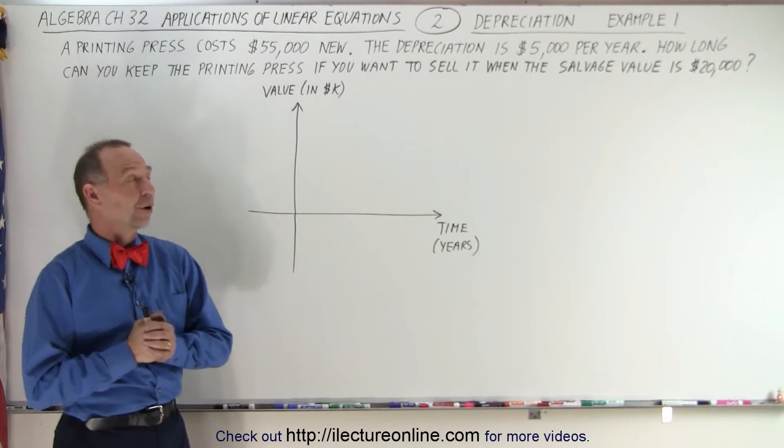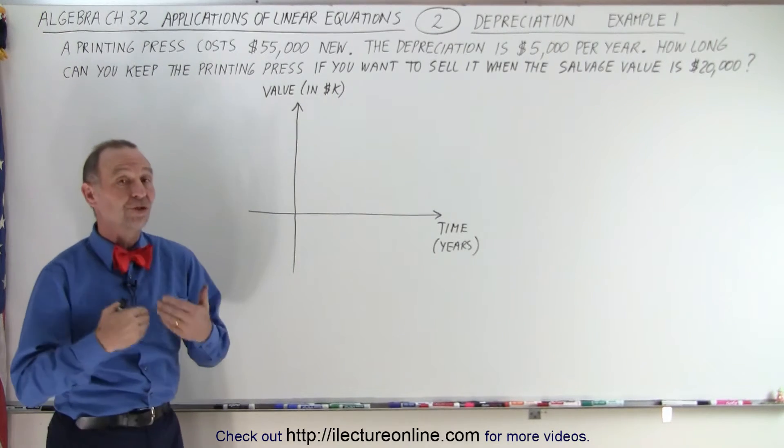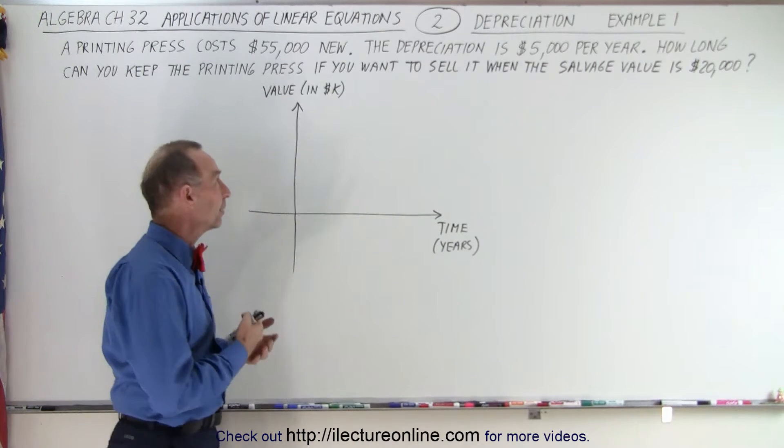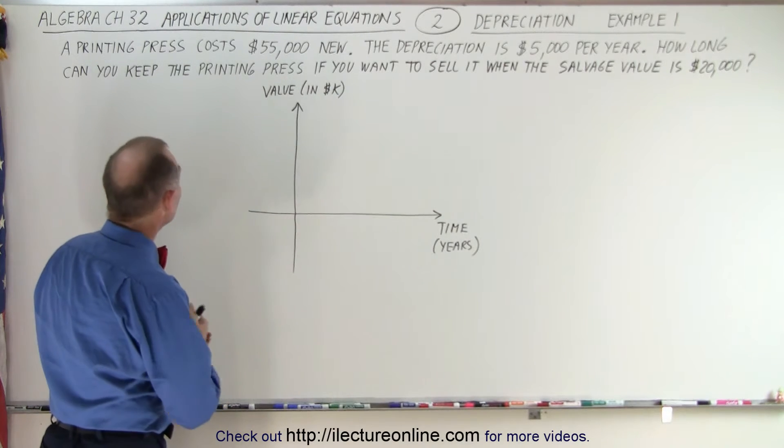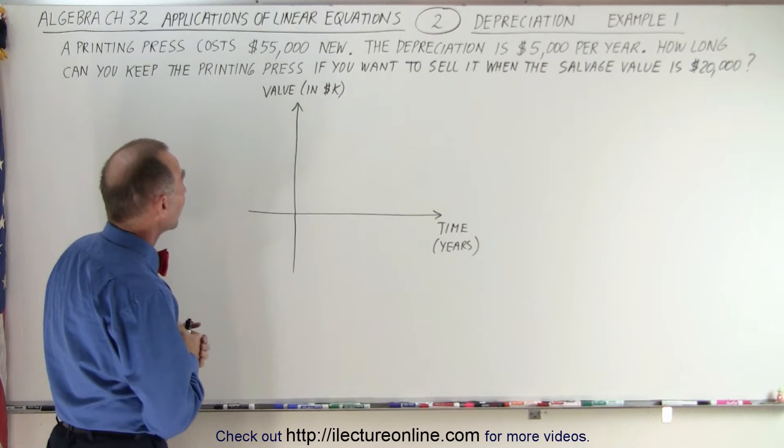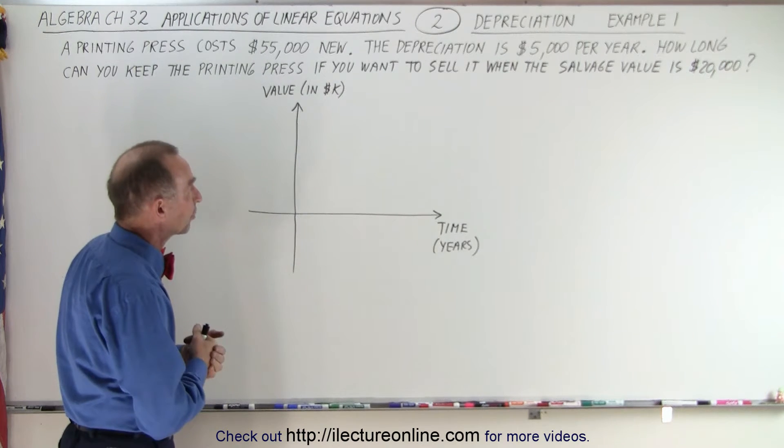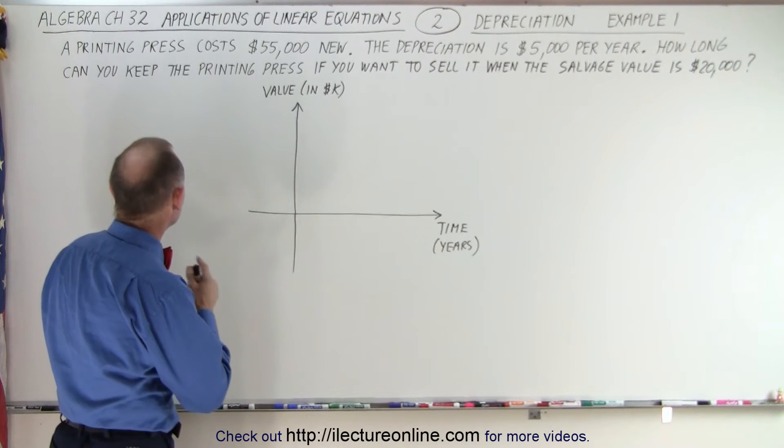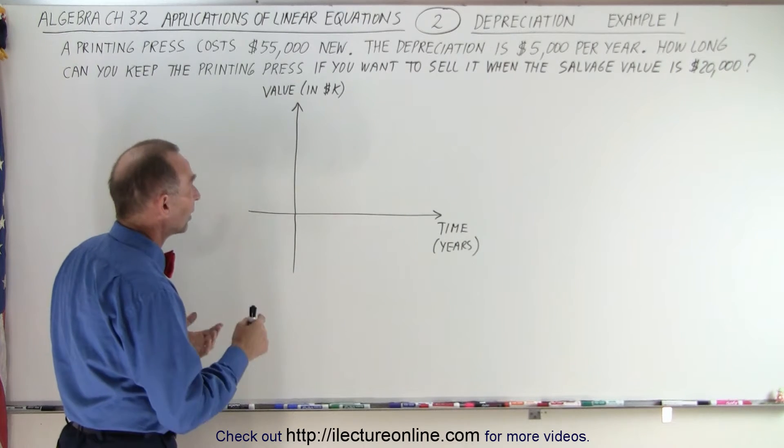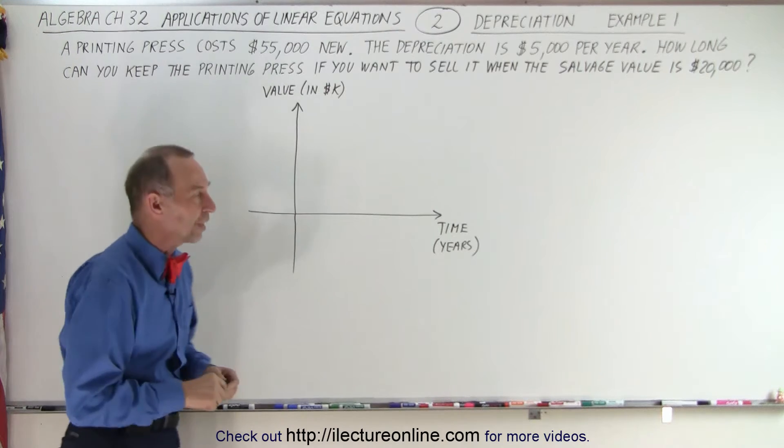Welcome to our lecture online. Our first example dealing with depreciation is the following problem. A printing press costs $55,000 when you purchase it new. The depreciation is $5,000 per year. How long can you keep that printing press if you want to sell it when the salvage value has dropped to $20,000?